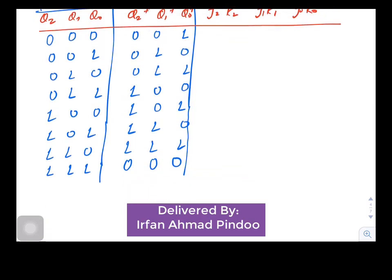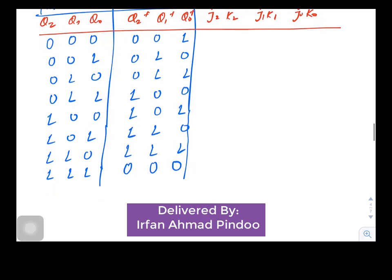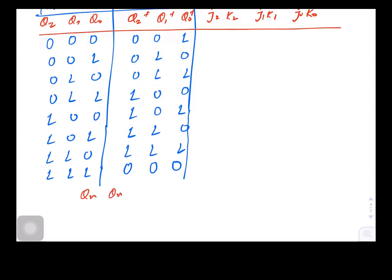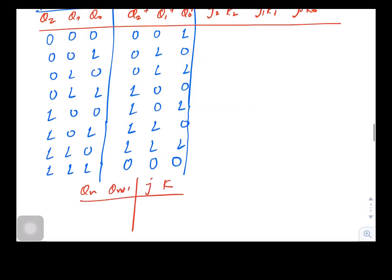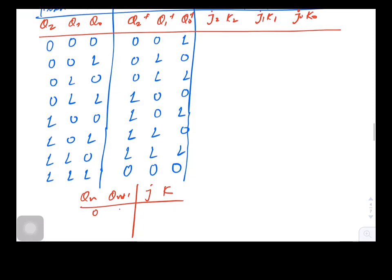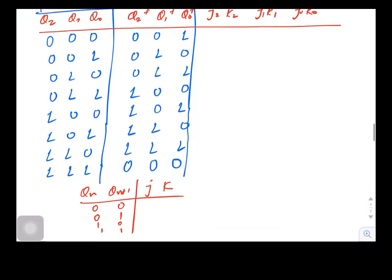Now to complete the rest of the table, what we must know is the excitation table for JK flip-flop. You must be knowing it already: with outputs given, we need to find what are the inputs. There are four possibilities: 0 0, 0 1, 1 0, and 1 1.